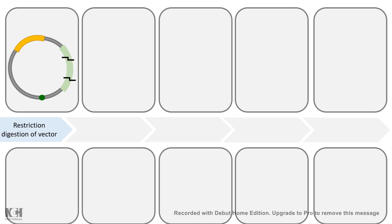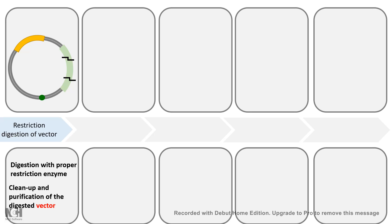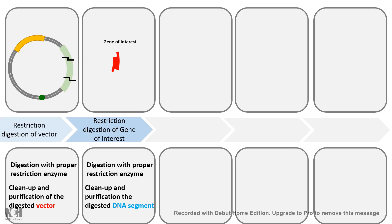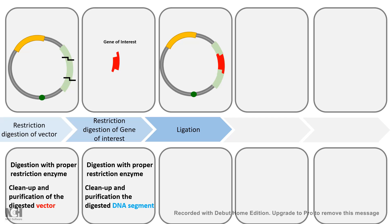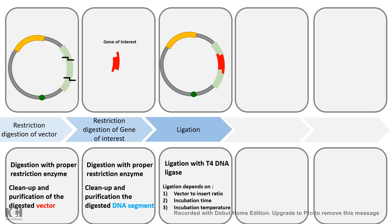Let's jump into the methodological steps. The first step is choosing a particular vector — a vector is the medium by which it can take our gene of interest inside the bacteria, and in most cases these are plasmids. The plasmid has to be digested with proper restriction enzymes, and then the digested plasmid should be purified and cleaned up. The gene of interest also has to be cleaved with the same restriction enzyme used for the plasmid. Digestion with the proper restriction enzyme is important for proper cloning, followed by cleanup of the digested products.